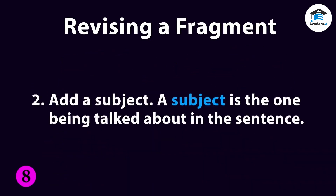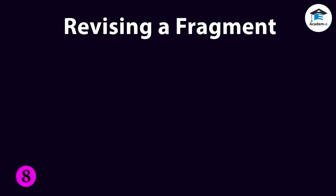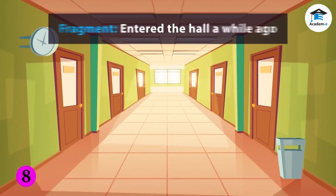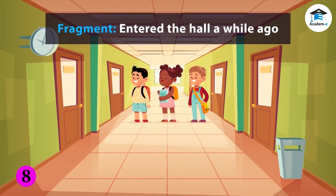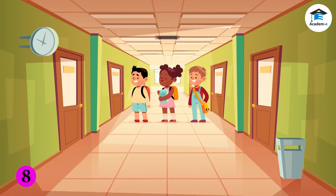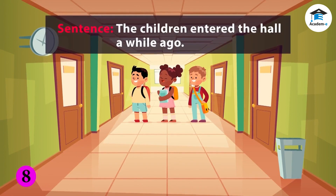The second way is by adding a subject. A subject is the one being talked about in the sentence. Example: to the fragment 'enter the hall a while ago,' add 'the children.' So, 'the children entered the hall a while ago' is now a sentence.